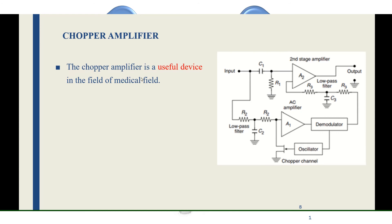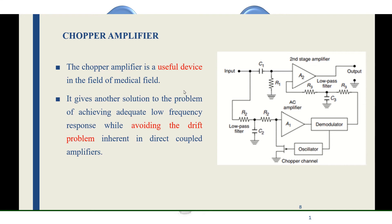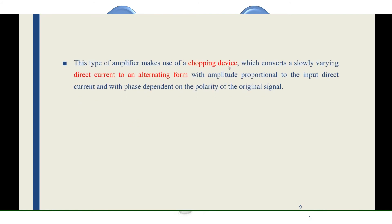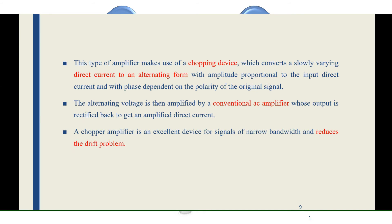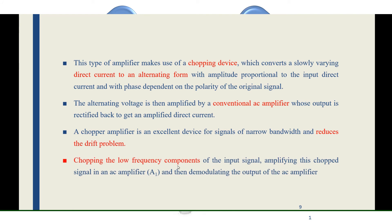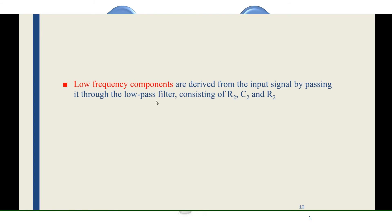The chopper amplifier is a very useful device in the medical field. It is mainly used for avoiding drift problems and stabilizing the circuit. The chopper device slowly varies the direct current into alternating form, with amplitude proportional to the input direct current and phase dependent on the polarity of the original signal. The AC amplifier amplifies this signal, which is then rectified back to get an amplified direct current. The low-frequency components are chopped, the chopped signal is amplified by the AC amplifier, then demodulated, and passed through a low-pass filter using components R2C2 to filter the signal before passing to the DC amplifier.